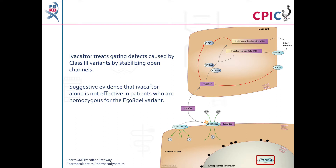A clinical study has investigated the safety of Ivacaftor in cystic fibrosis patients who were homozygous for F508-DEL, a CFTR class 2 variant. The study observed that these patients were unlikely to respond to Ivacaftor alone, possibly because the F508-DEL variant prevents expression of the CFTR protein at the membrane. However, this study was not powered to detect a difference in the efficacy of Ivacaftor, so this result should be interpreted with caution.